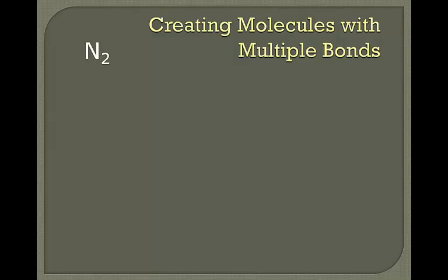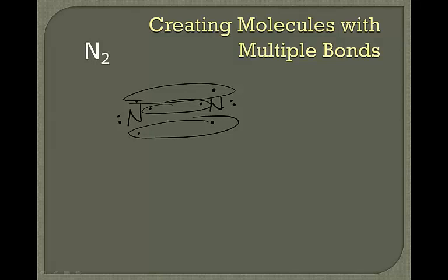Let's take a look at N2. Nitrogen has five valence electrons. We'll share one, we'll share two, and we will share three. So now we have nitrogen with a triple bond to another nitrogen.